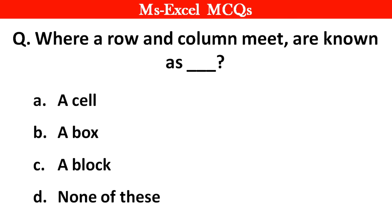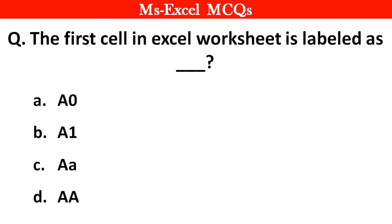Next question. Where a row and a column meet is known as dash. The right answer is option D: Cell. Next question. The first cell in an Excel worksheet is labeled as dash. The right answer is option B: A1.